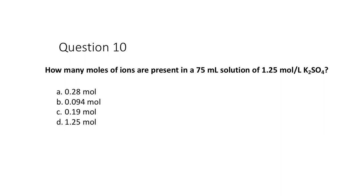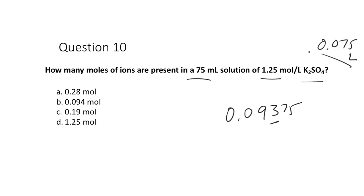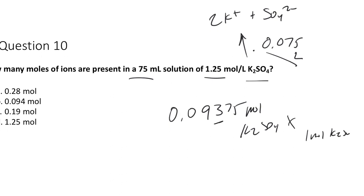Question: how many total ions are present in 75 mL of 1.25 mol/L K₂SO₄? Multiplying 1.25 mol/L by 0.075 L gives 0.09375 moles of K₂SO₄. K₂SO₄ in solution gives 2 moles of K⁺ and 1 mole of SO₄²⁻, so one mole of K₂SO₄ gives 3 moles of ions. That corresponds to 0.09375 × 3 = 0.281 moles of solute particles.